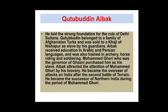Qutubdin Aibak belonged to a family of Afghan Turks and was sold to a Qazi of Nishapur as a slave by his guardians. Aibak received education in Arabic and Persian language and was also trained in archery, horse riding, and soldiering. Muhammad Ghori, who was the governor of Ghazni, purchased him as his slave.